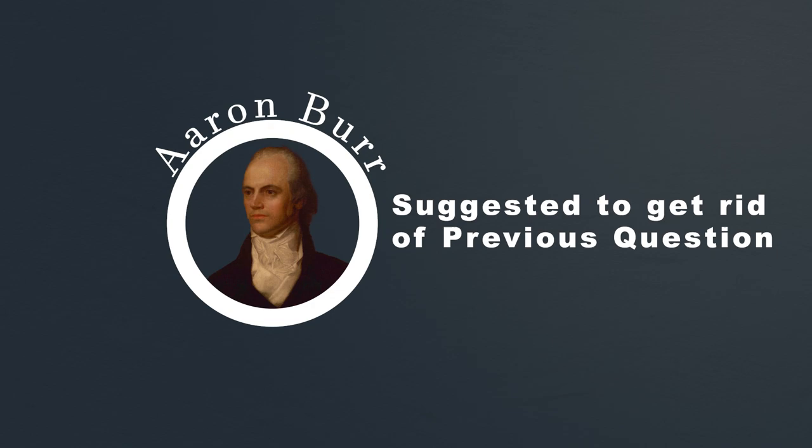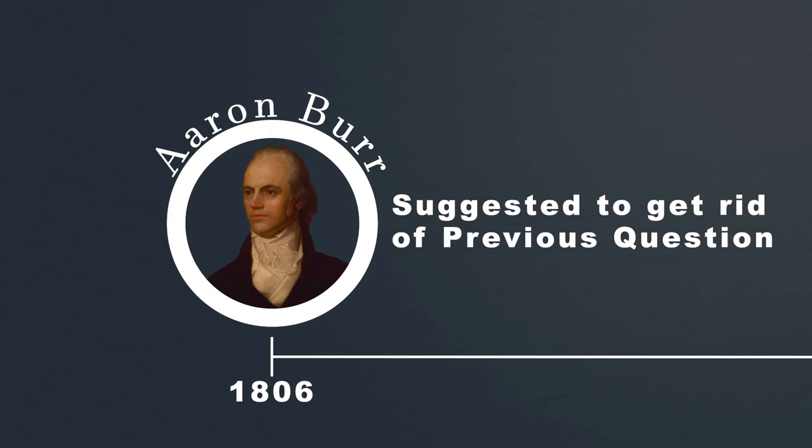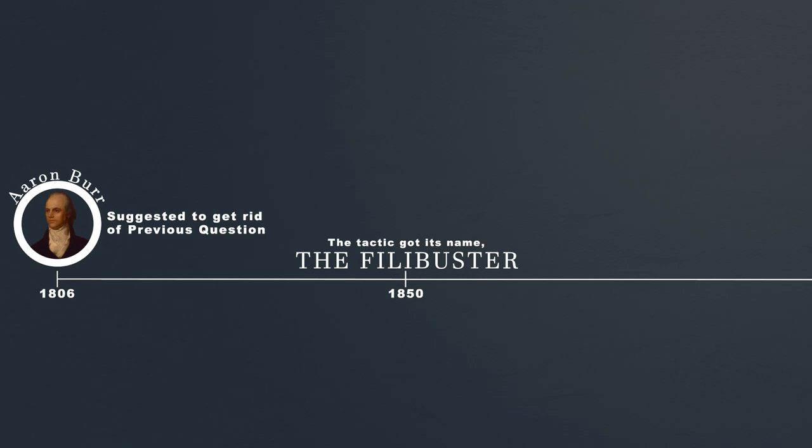Eventually, senators would abuse the lack of the previous question rule by continuing debate on a bill for as long as possible. This political tactic eventually became known as the filibuster.